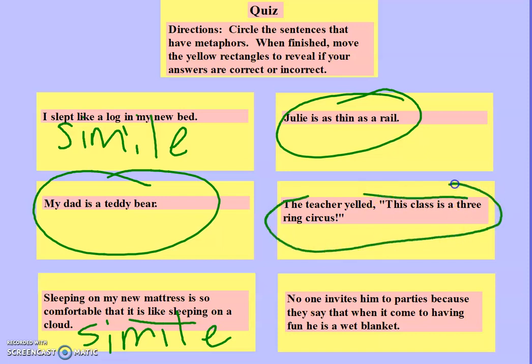'No one invites him to parties because they say that when it comes to having fun, he is a wet blanket' — that's the metaphor, comparing him to a wet blanket, meaning he's no fun at a party — just limp and not fun to hang around. So those were some metaphors you learned today, and you will have some practice to do.